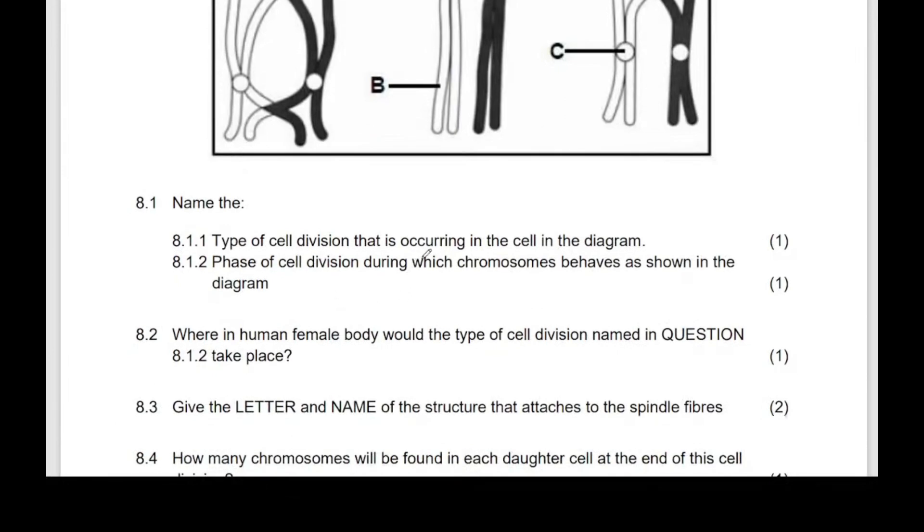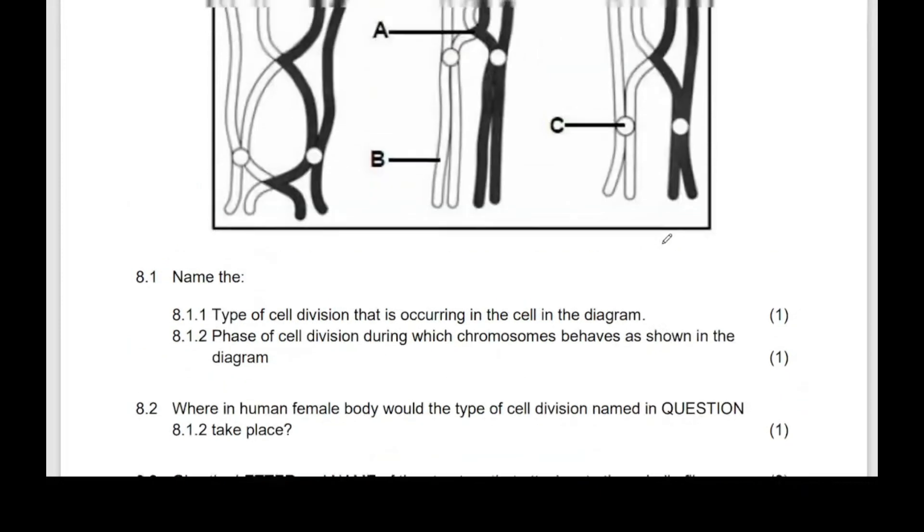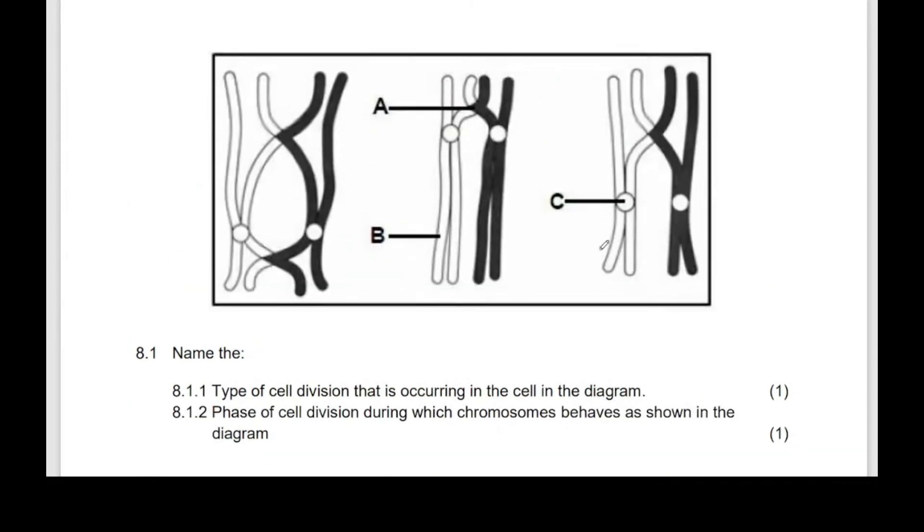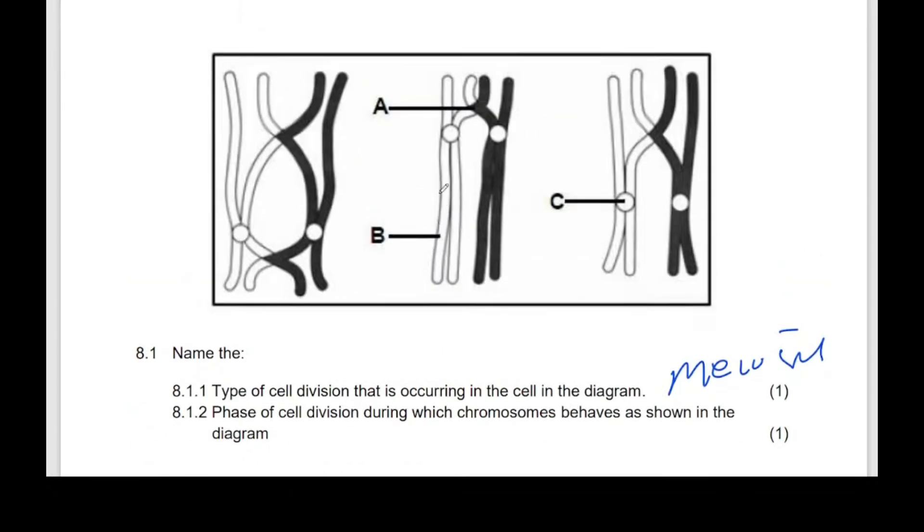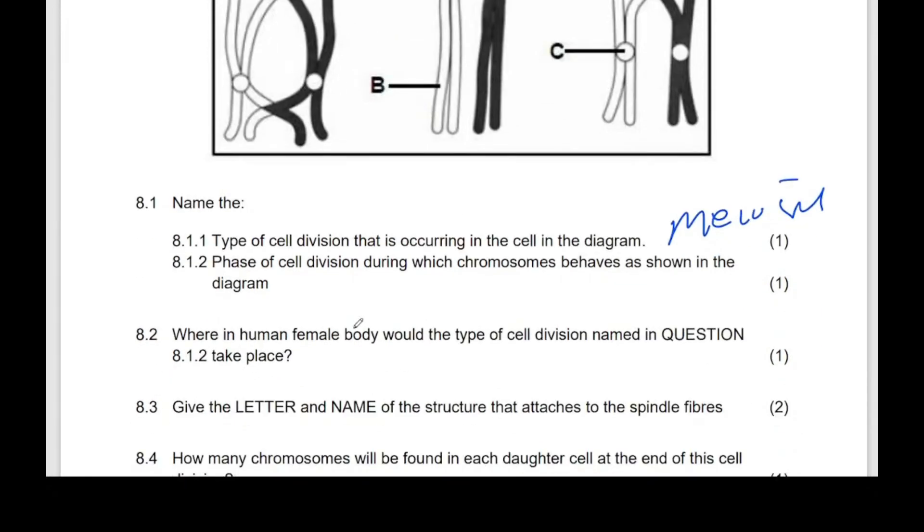Type of cell division is occurring in the cell in the diagram. Which kind of cell division is this? It's meiosis. So the answer is meiosis. The phase of the cell division during which the chromosomes behave as in the diagram, how do we call this? This phase. Is it prophase? If you say prophase just like that, it's incorrect. Prophase one.